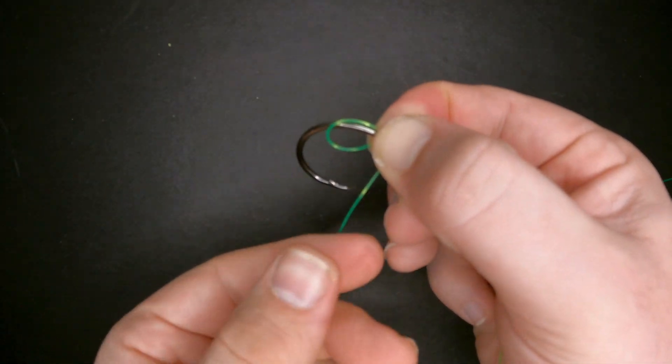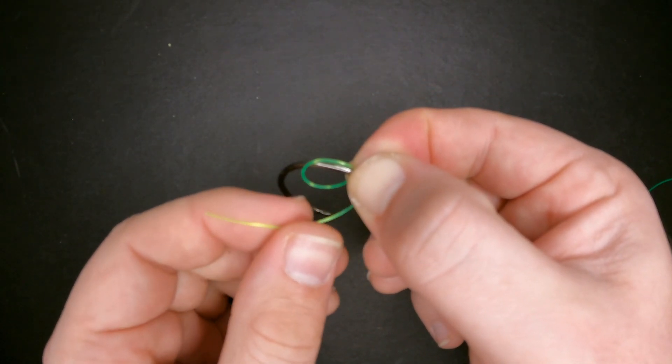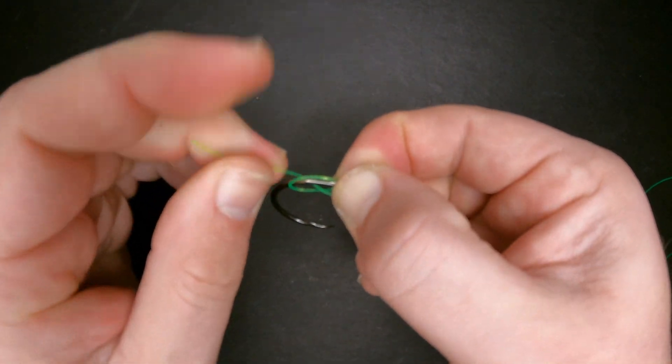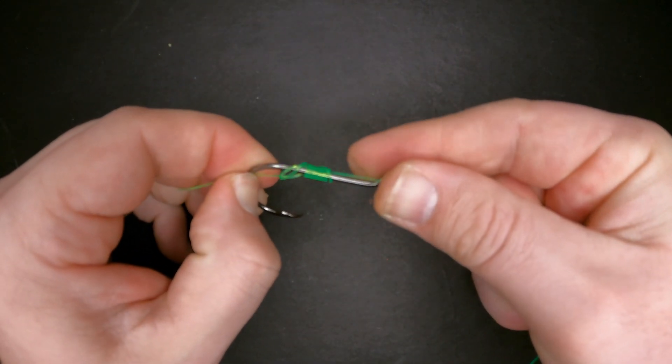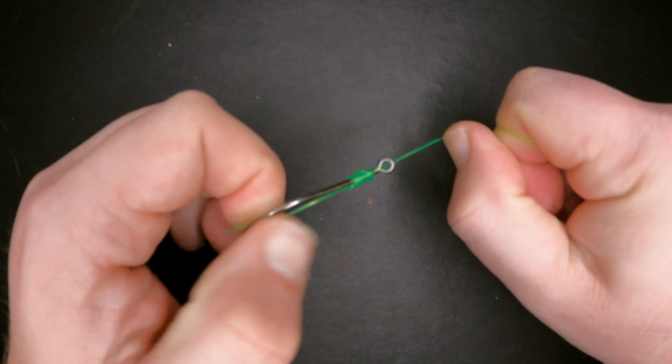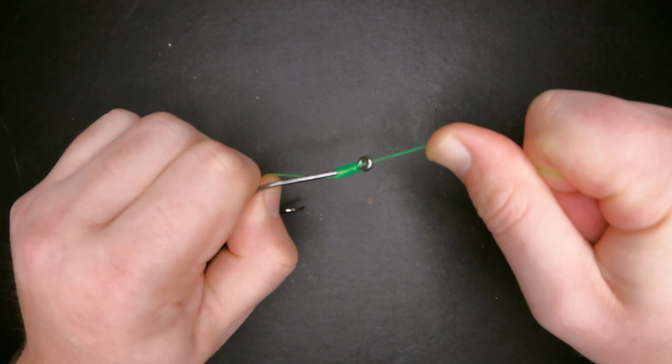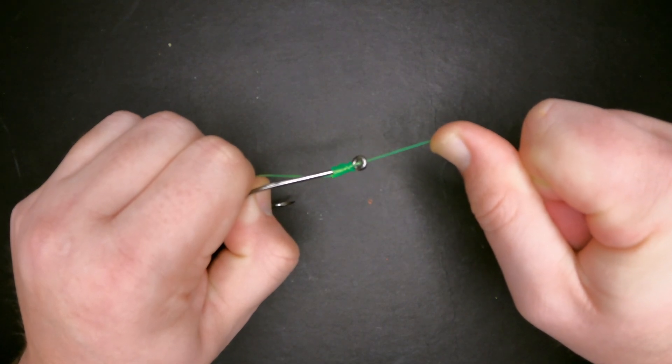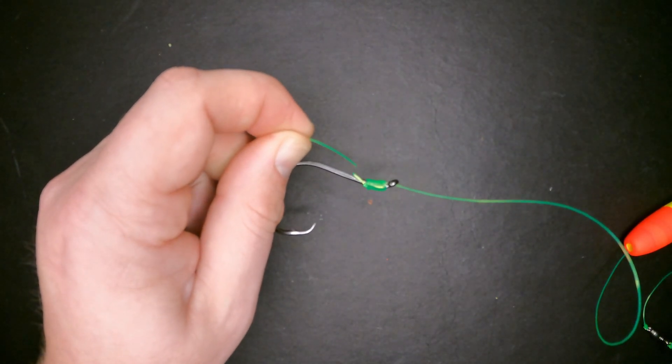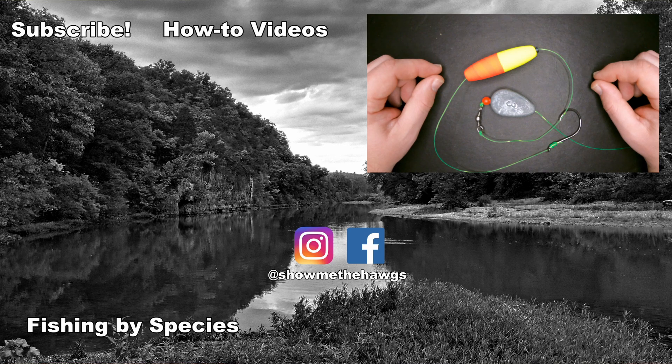Now remember that little loop that we created at the beginning of this knot. We're going to take the tag end, thread it through that loop, and then pull in the main line to close that loop. And then keeping the tension on the tag end still I'm going to pull all those wraps up to the eye and really pull it down to make sure it's tight. Trim the tag end and that is how you tie a Santee Cooper rig.